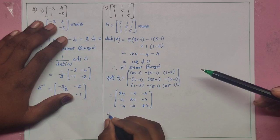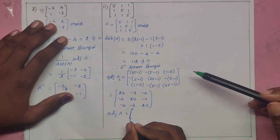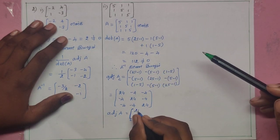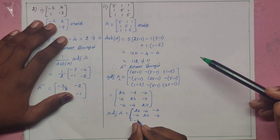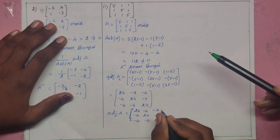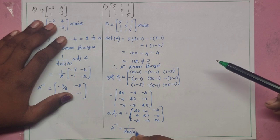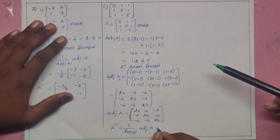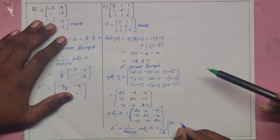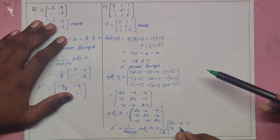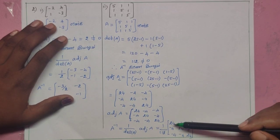Adjunct of A equals AC transpose. Adjunct of A equals AC transpose. The matrix of cofactors gives us: 24, minus 4, minus 4, minus 4, minus 4, minus 4, 24. A inverse equals 1 by determinant of A. A inverse equals 1 by 24 times the adjunct.